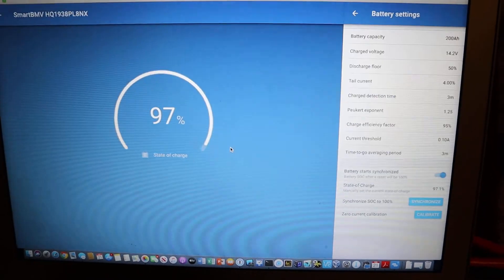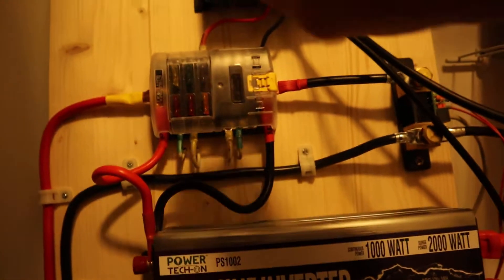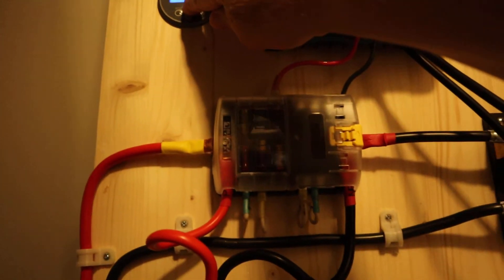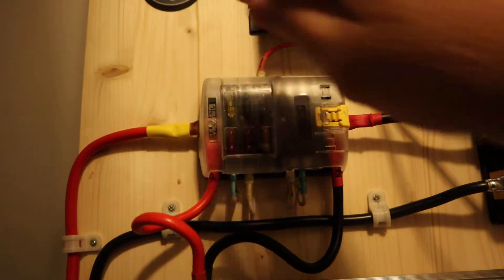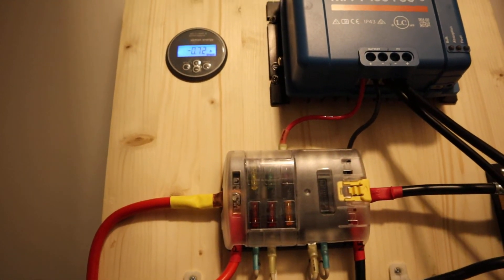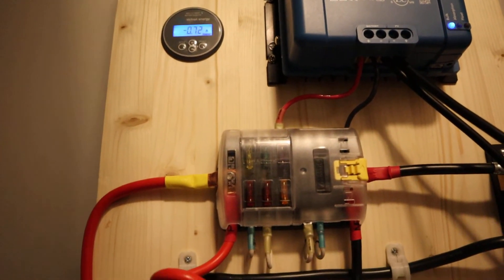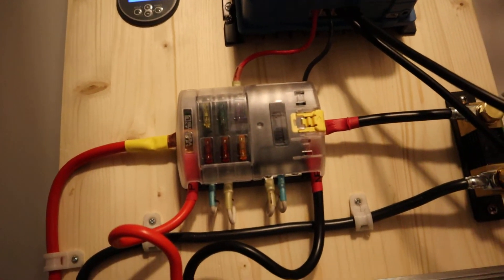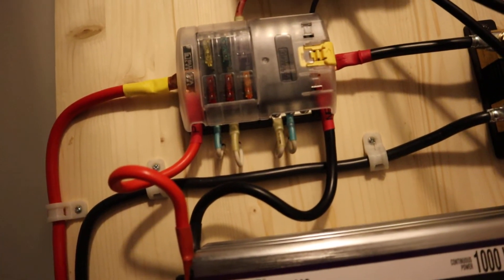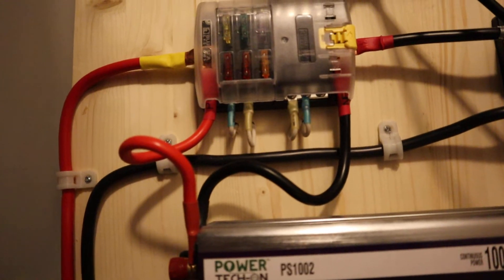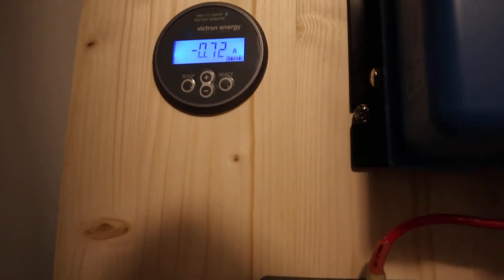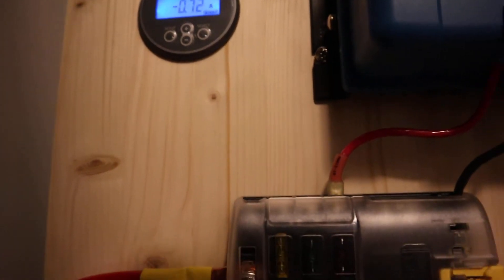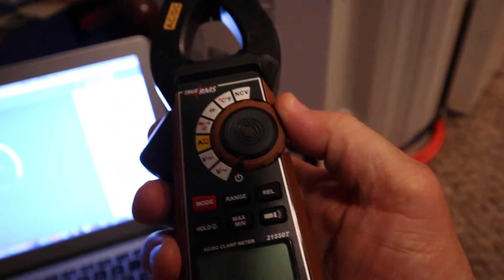Now once you're done with that, the system should be zeroed out. I'm going to scroll through here till I get to the load. I'm pulling minus 0.72 amps and I have a clamp-on amp meter here which I should have removed before I did this. Let me turn it on, here's my clamp-on meter.